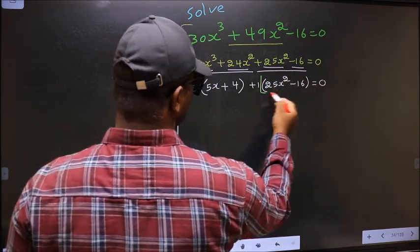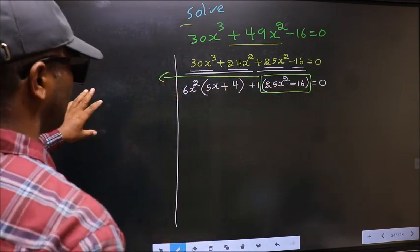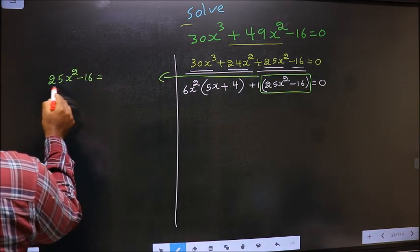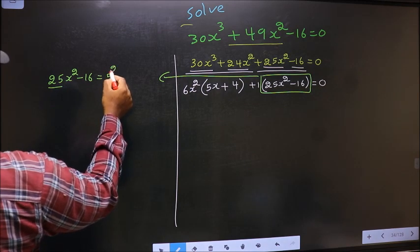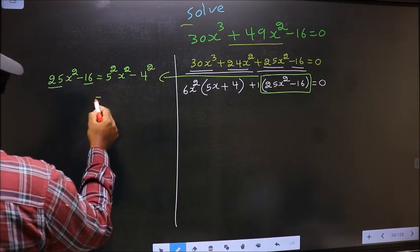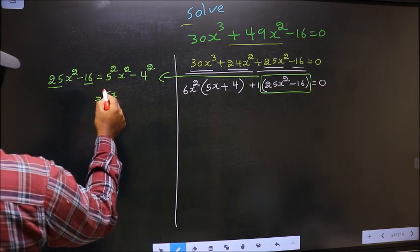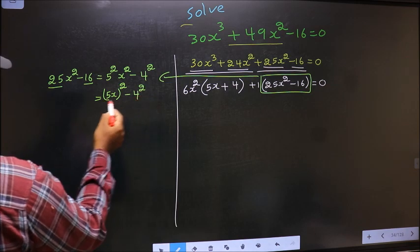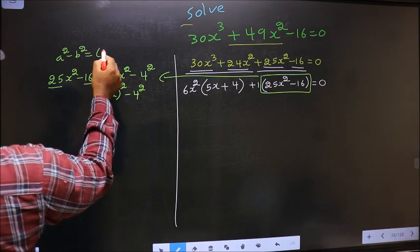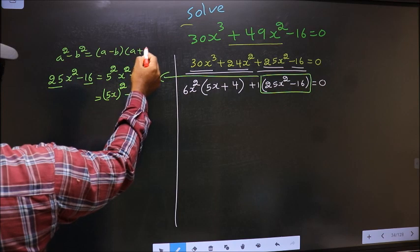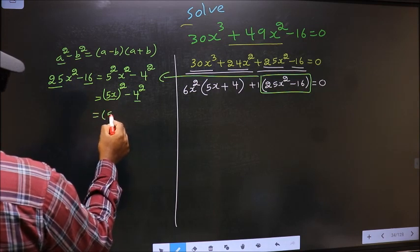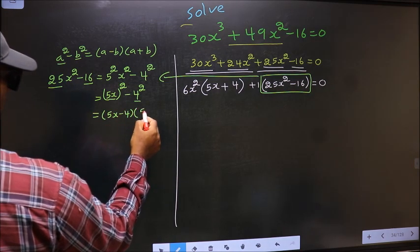Now I will simplify the quadratic 25x² - 16. In place of 25 I write 5², and in place of 16 I write 4². So 5²x² is (5x)² minus 4². Applying the formula a² - b² = (a - b)(a + b), with a = 5x and b = 4, we get (5x - 4)(5x + 4).